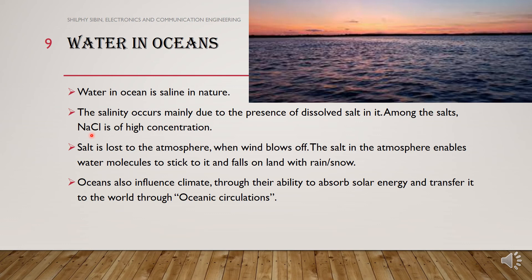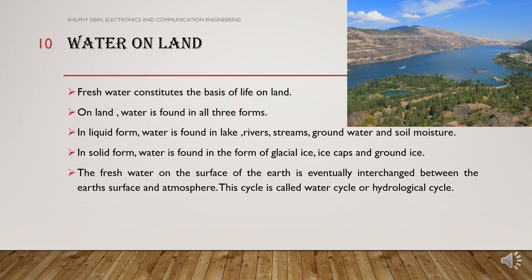Oceans also influence climate through their ability to absorb solar energy and transfer it through oceanic circulations. On land, we have fresh water, and fresh water constitutes the basis of life on land.